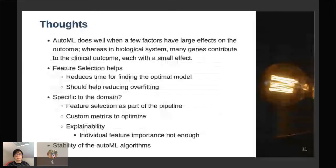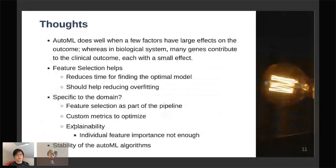I don't want to draw very strong conclusions based on an incomplete experiment, but I have the feeling that AutoML probably does pretty well when there are a few factors with large effects on the outcome. But in a biological system, it's basically a lot of factors that contribute to the clinical outcome and each one has small effect. I am not sure how AutoML deals with this and whether it could optimize efficiently to the best model.